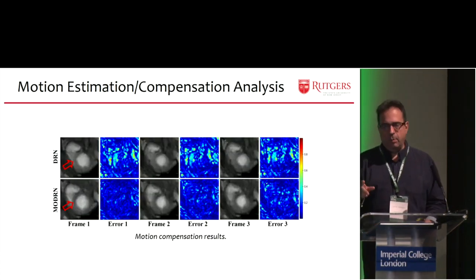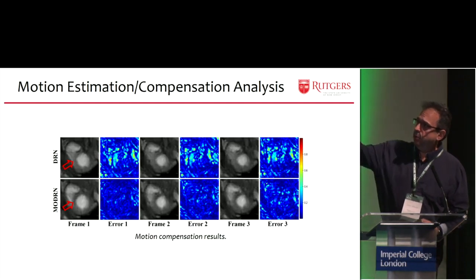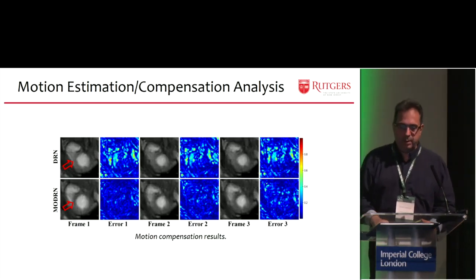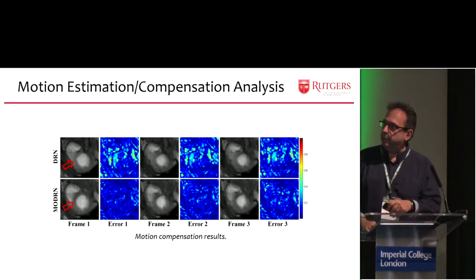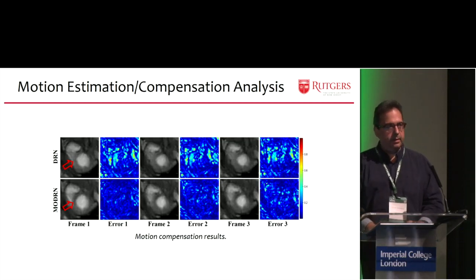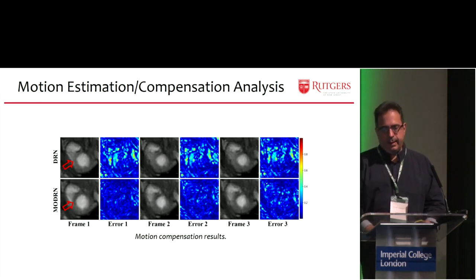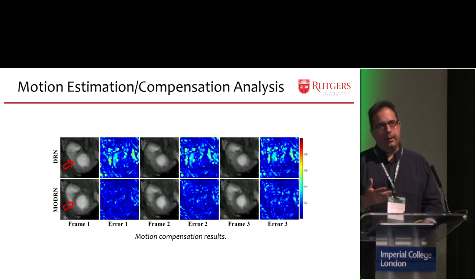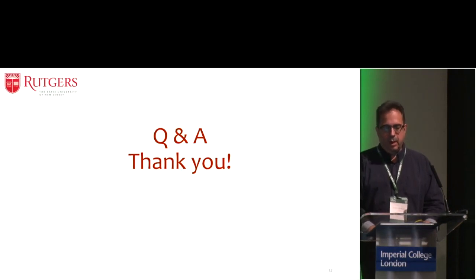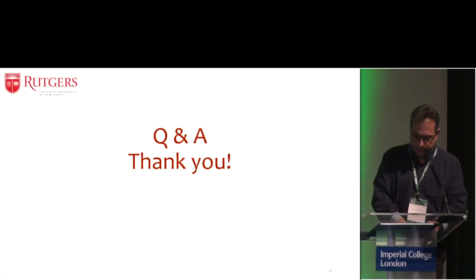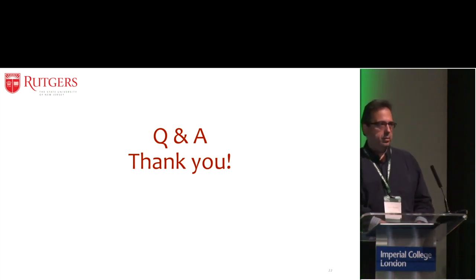Finally, I would like to show you the motion compensation results — the error in different frames, showing only the first framework versus the combined approach. You get much clearer results over time. These are encouraging results, and only the non-linearities of the k-space can be captured with these networks. Thank you very much.